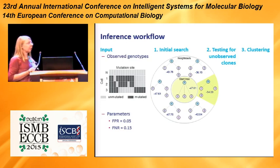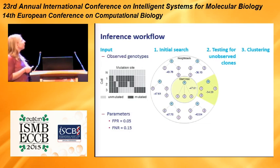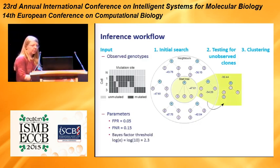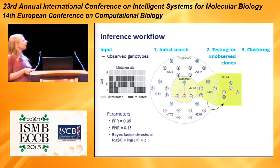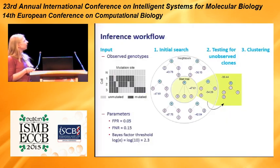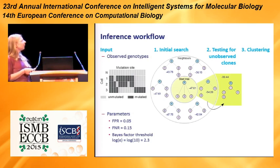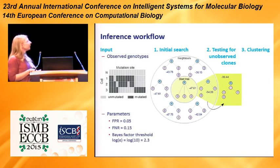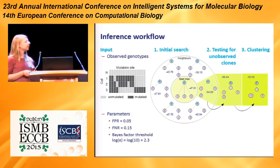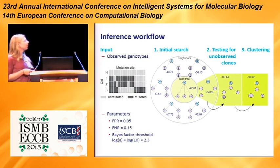The second step tests for unobserved clones by inserting empty nodes into branch points of the tree, since only clones at branch points can create additional mutation patterns in the data. We insert an unobserved clone, rerun the initial search to account for local inaccuracies, and check whether the likelihood improves sufficiently — that's where the Bayes factor threshold comes in. The third step is clustering, an iterative procedure where we go along branches and step by step cluster cells into clonal regions along edges.